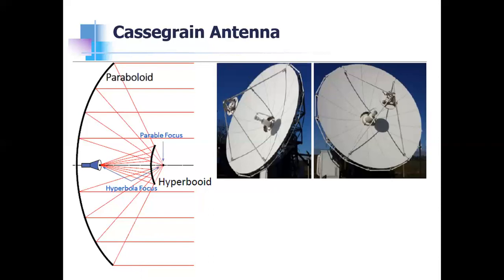Another advantage is that the antenna noise temperature of this Cassegrain configuration is usually less than that of antennas with feeds placed at the focus — that is, front feed configurations. Additionally, the sidelobes caused by the spillover of the feed radiation from the subreflector — where radiation misses the primary reflector — are usually less. These are the key features of the Cassegrain antenna.